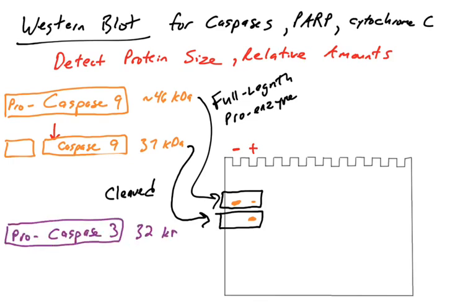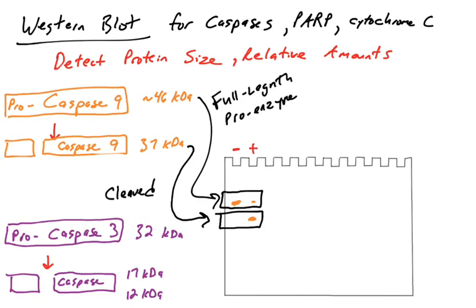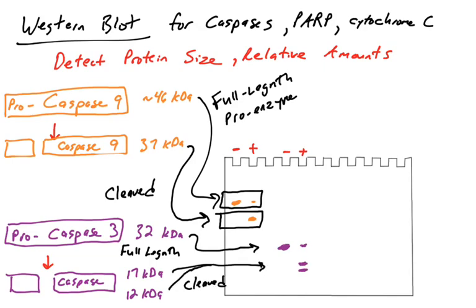This can be done for all of the caspases. Another one commonly analyzed by Western blot is caspase 3. Caspases are made in their pro full-length version, so they are inactive zymogens — caspase 3 is 32 kilodaltons. When caspase 3 is cleaved from its pro version into its active version — initiator caspases cleave caspase 3 from the pro form to the active form — caspase 3 becomes smaller and active. When cells are not undergoing apoptosis, you find only the full-length version; when they are, the full-length version disappears and the cleaved version appears.